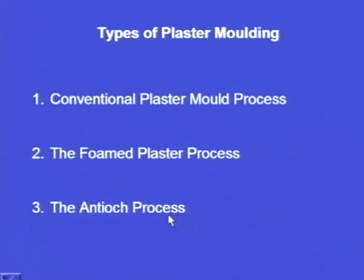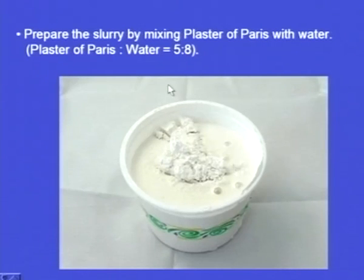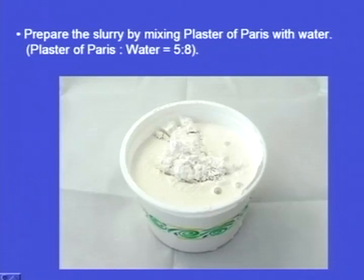Let us see this process in detail. In the conventional plaster moulding process, let us take a small example — this is the casting to be made and this is the kind of pattern we will use, preferably a metallic pattern. We prepare the slurry by mixing plaster of Paris with water in a ratio of 5 to 8, meaning 5 parts plaster of Paris and 8 parts water.